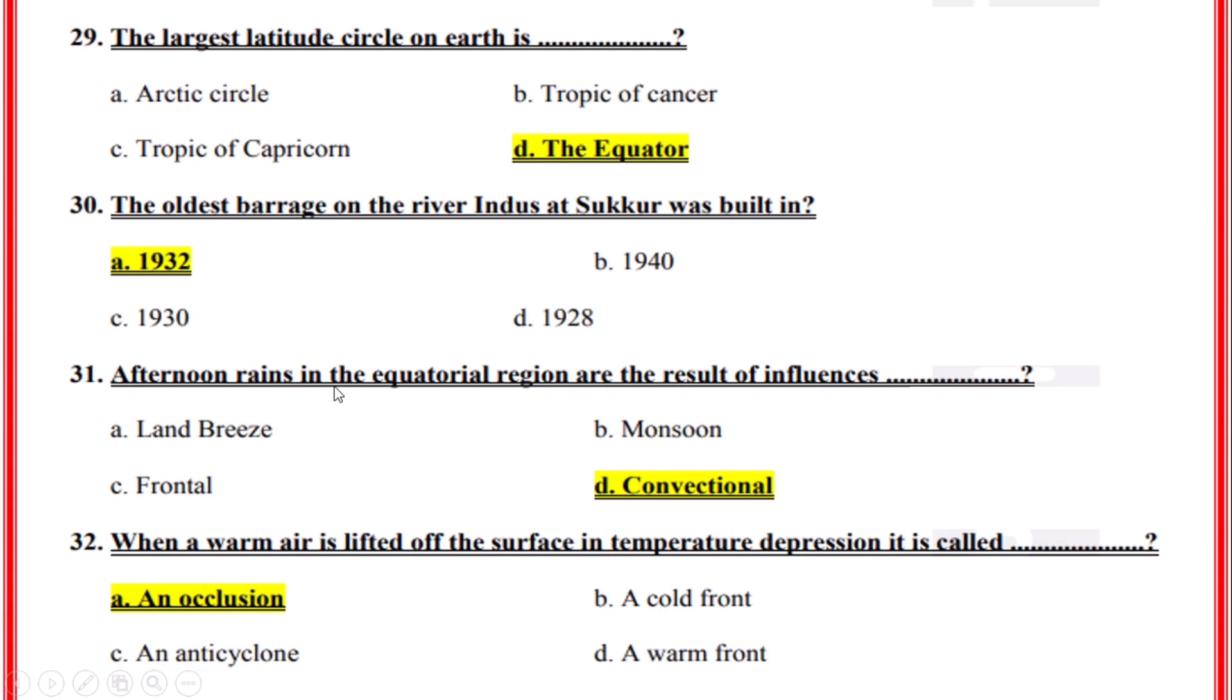Afternoon rains in the equatorial region are the result of influences? Correct option: D, Convectional.